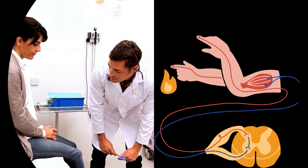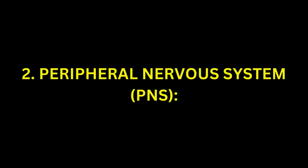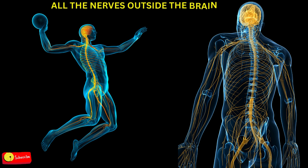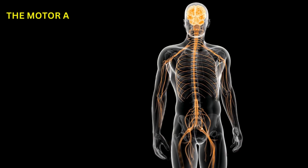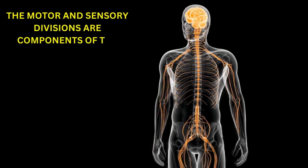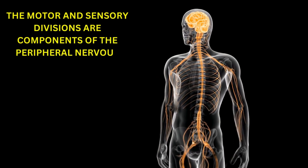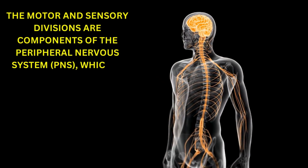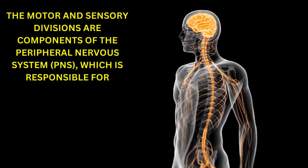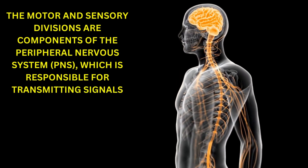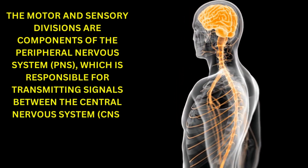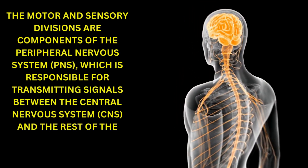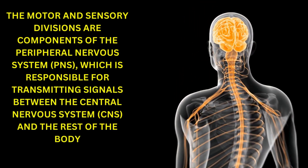Peripheral Nervous System (PNS): The PNS includes all the nerves outside the brain and spinal cord. The motor and sensory divisions are components of the peripheral nervous system, which is responsible for transmitting signals between the central nervous system (CNS) and the rest of the body.